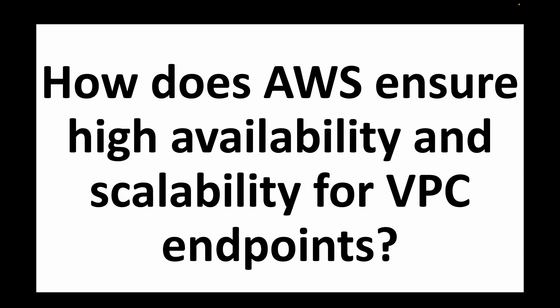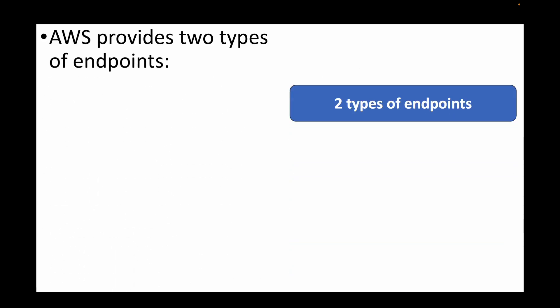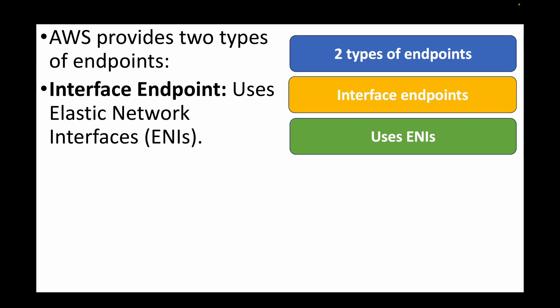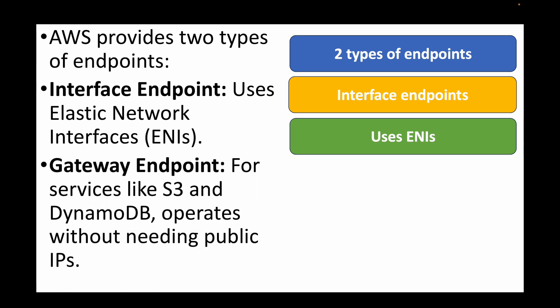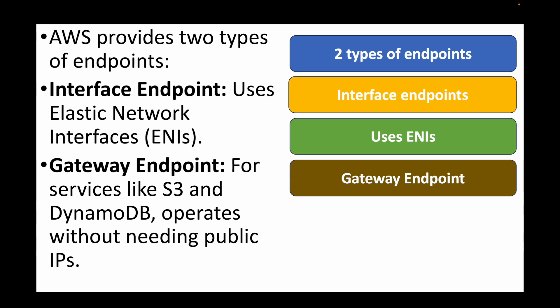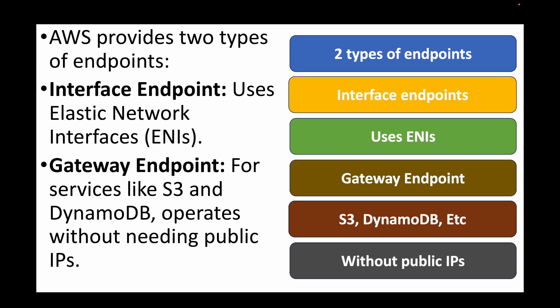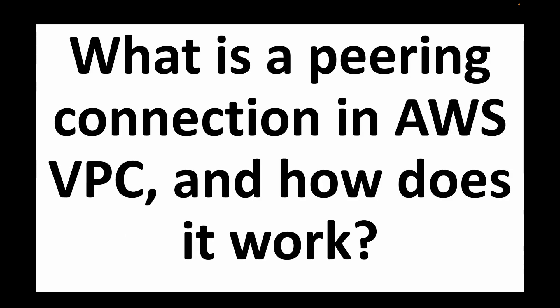The next question is: how does AWS ensure high availability and scalability for VPC endpoints? In VPC, we have two types of endpoints: interface endpoints, which work with Elastic Network Interfaces (ENIs), and gateway endpoints, used for services like S3 and DynamoDB without needing public IPs. These endpoints are used when you want a private network, avoiding NAT gateways, which improves security and performance by avoiding the public internet.